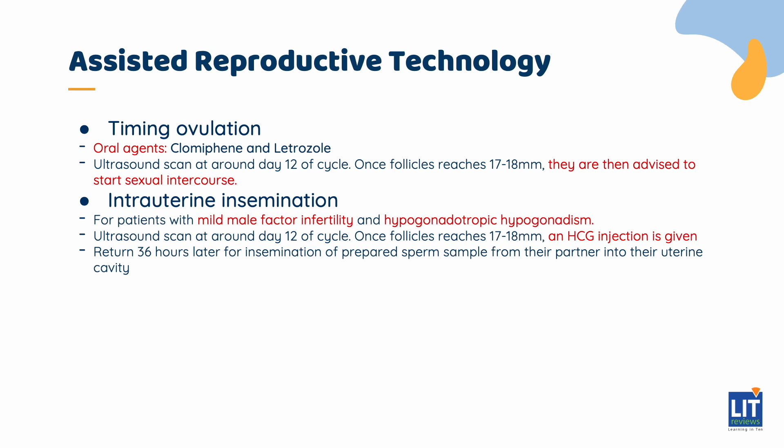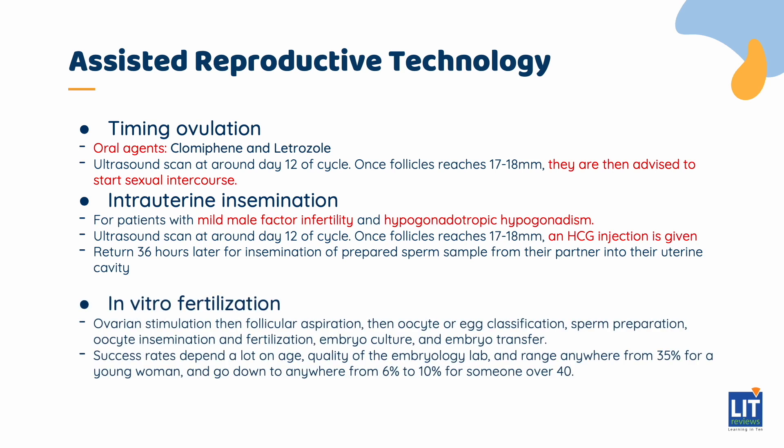The second option is intrauterine insemination (IUI), with or without ovulation induction, for patients with mild male factor infertility and hypogonadotropic hypogonadism. Similar to the first option, patients attend an ultrasound scan to track follicle growth. However, once the follicle reaches 17 to 18 mm, an HCG injection is given to trigger maturation and release of the oocyte. The patient returns 36 hours later for insemination of a prepared sperm sample into the uterine cavity.